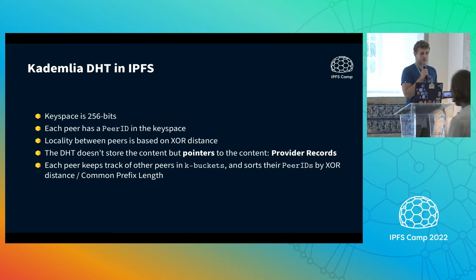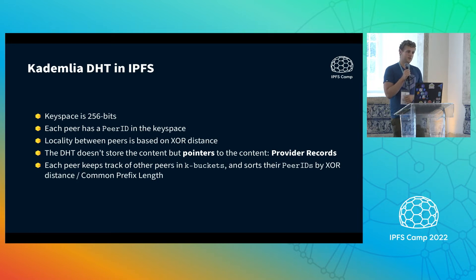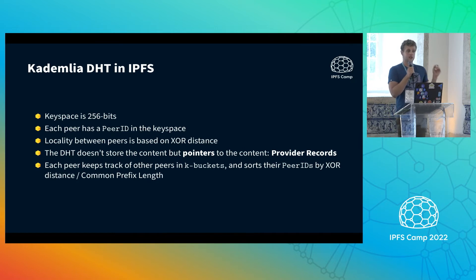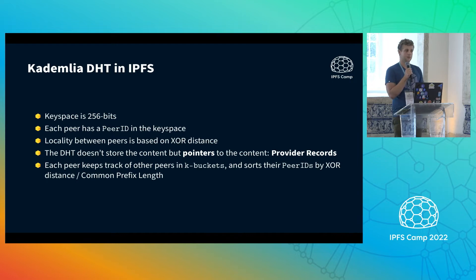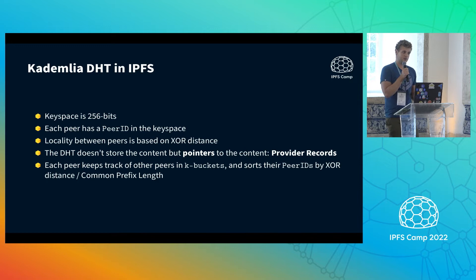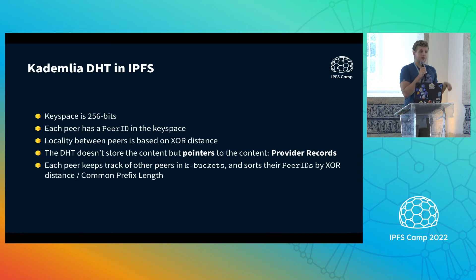IPFS and libp2p implement the Kademlia DHT, using a key space of 256 bits. Each node in the network has its own peer ID, which can be represented as a 256-bit value living in this key space. Content also lives in the same key space as the peer IDs. The locality in this key space is based on the XOR distance between the bits.